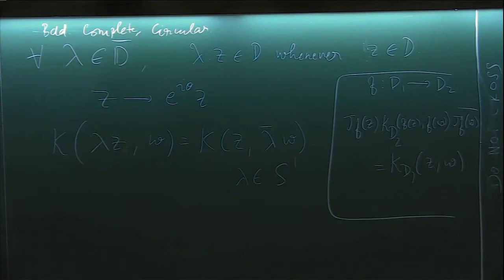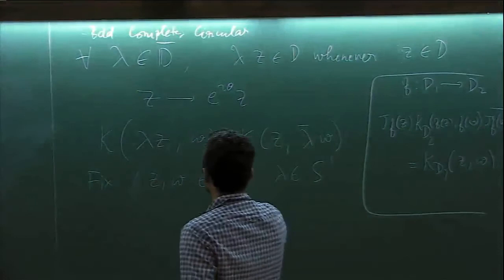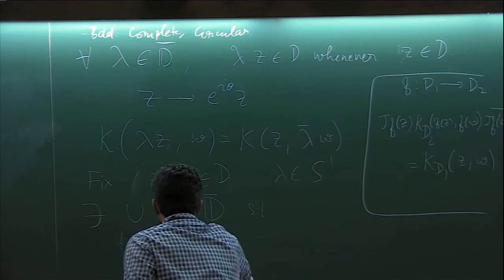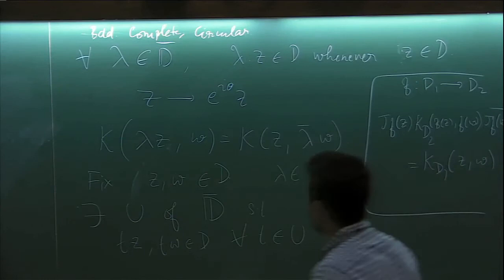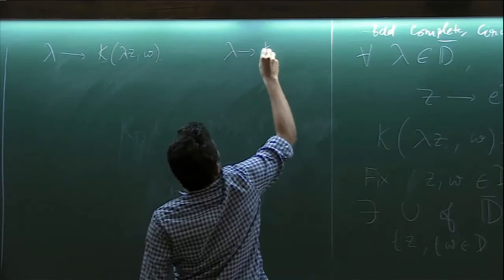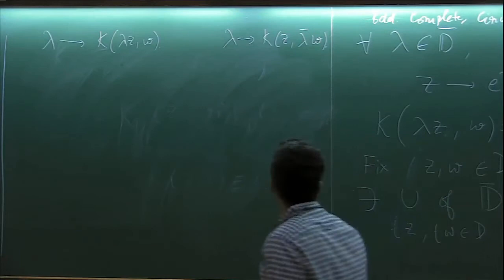So with this it can be checked that this gives a formula of the type, the transformation formula of the type k of lambda z comma w is equal to k of z comma lambda bar w with a bit of tweaking in the arguments where lambda belongs to S1. So let's fix z and w in D. Then there exists a neighborhood u of the closed unit disk such that tz and tw both belong to d for all t in u.